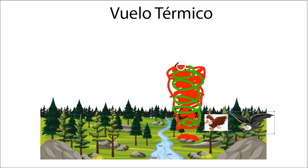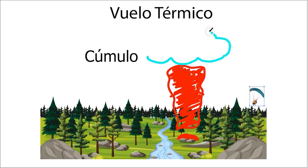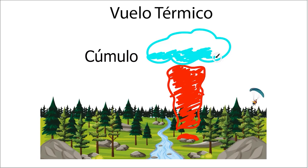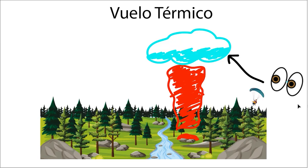Clouds: not all clouds indicate thermals, but cumulus clouds do. These clouds form directly above thermals, so if you see a cumulus cloud, chances are there is a thermal underneath it. And that covers the basic theory of thermal flight. Thermals allow us to gain significant altitude and travel long distances. While flying in thermals can be bumpy at times, it is also one of the most rewarding experiences in paragliding.